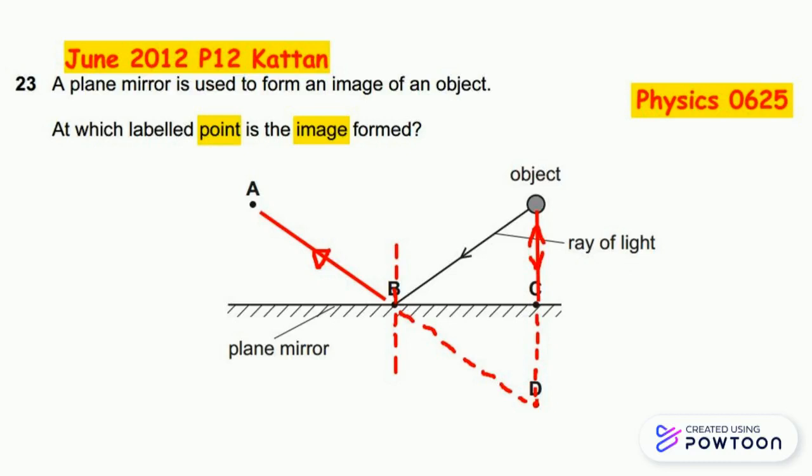Both extended lines from reflected ray 1 and reflected ray 2 intersect and meet together at point D.